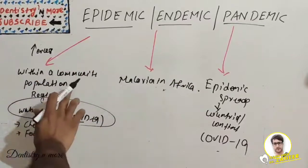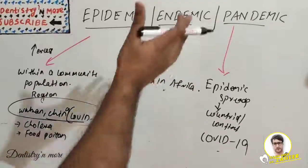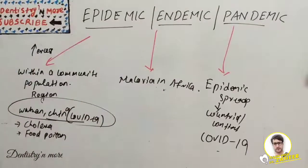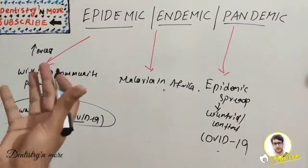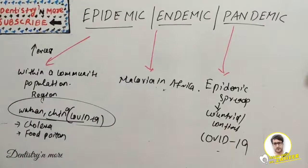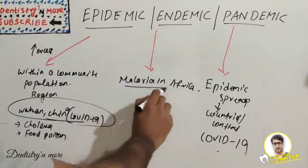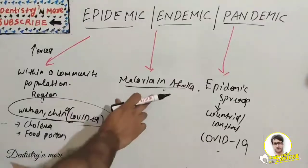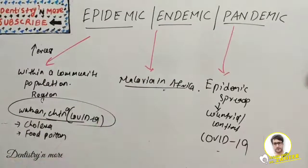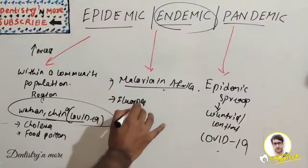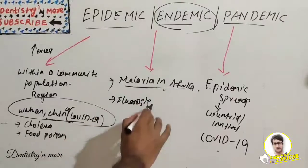We cannot say an endemic disease is purely epidemic or pandemic, but it can sometimes become an epidemic when cases rapidly increase. A constant presence of a particular disease over a prolonged period of time in a particular region or group of people is known as an endemic disease. For example, fluorosis is an endemic disease because it is commonly seen in a few states.